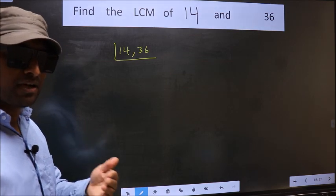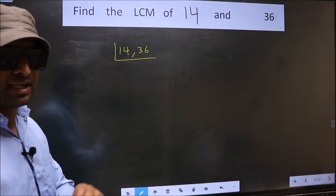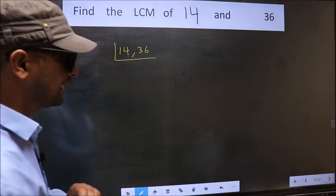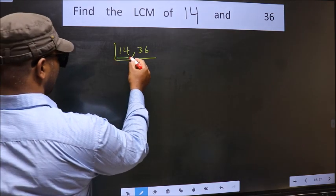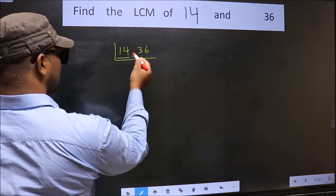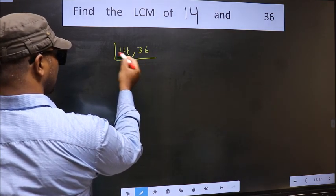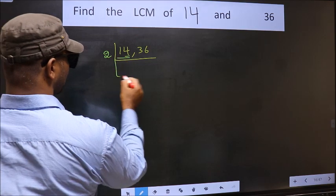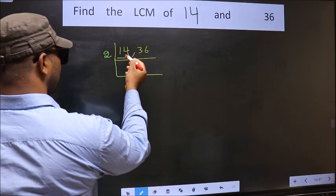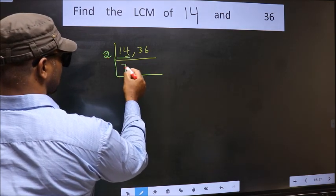Now you should focus on the first number which is 14. For this number, last digit is 4, so take 2. When do we get 14 in the 2 table? 2, 7, 14.